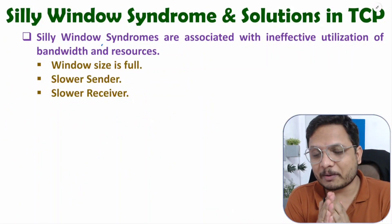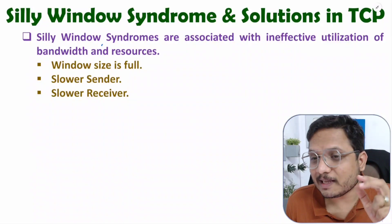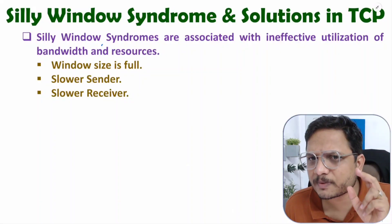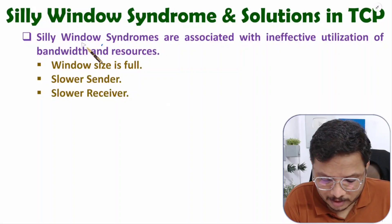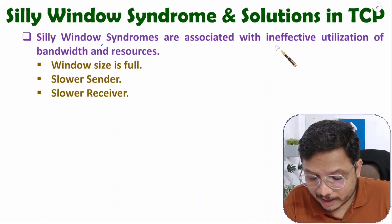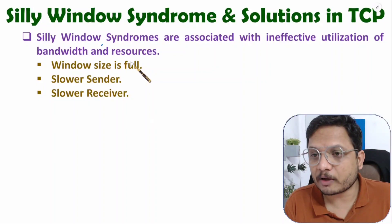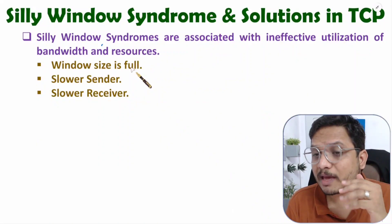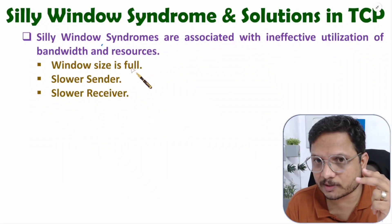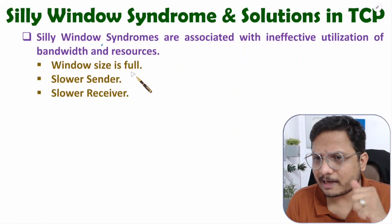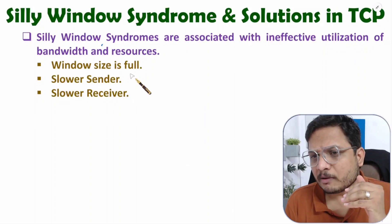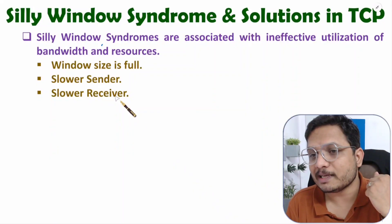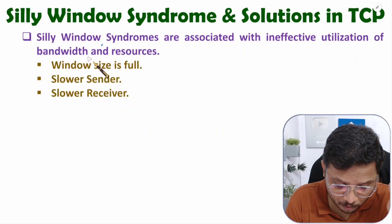Hello friends, welcome to Engineering Funda family. In this video I'm going to explain silly window syndrome and its solution in TCP. Silly window syndrome comes under the category of ineffective utilization of bandwidth and resources on a computer network. Whenever you are using TCP, sometimes because of some issues you may have ineffective utilization of resources.